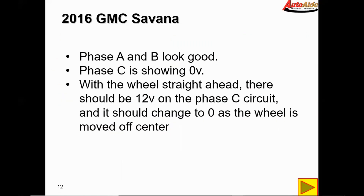Just to recap: phase A and B look good. Phase C is showing at 0 volts. With the wheel straight ahead there should be 12 volts on that phase C circuit, and it should change to 0 as the wheel is moved off center, which it was not doing.